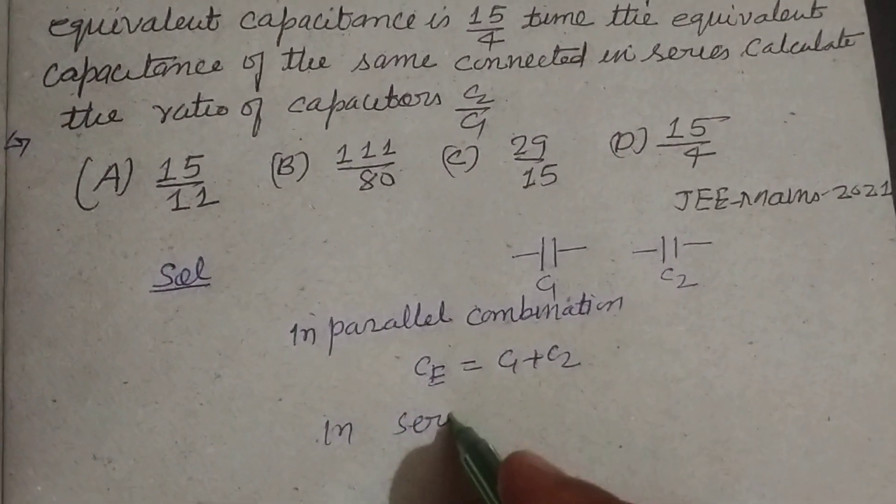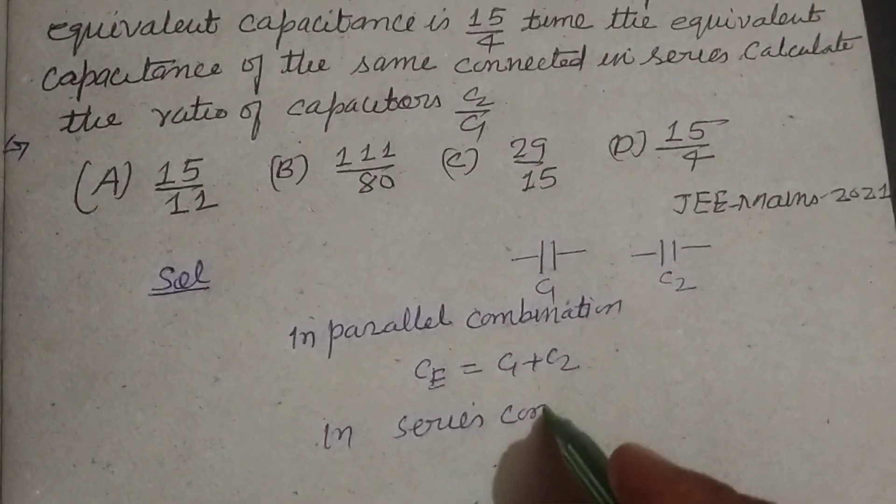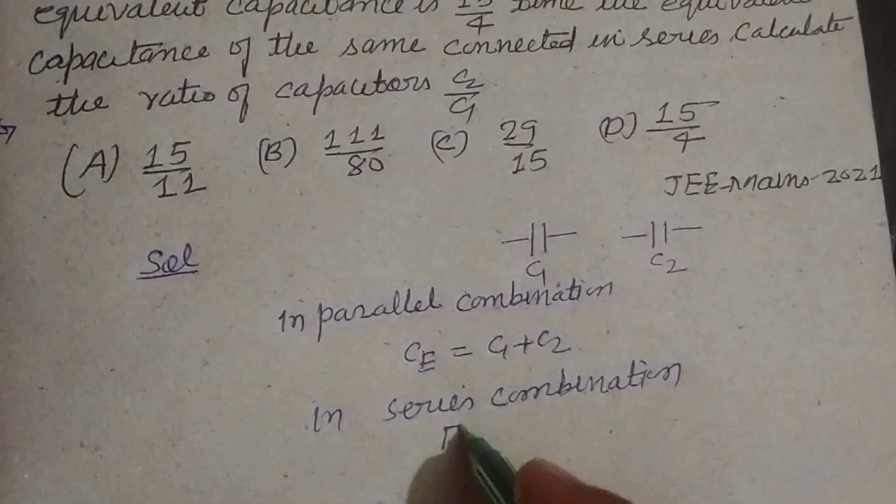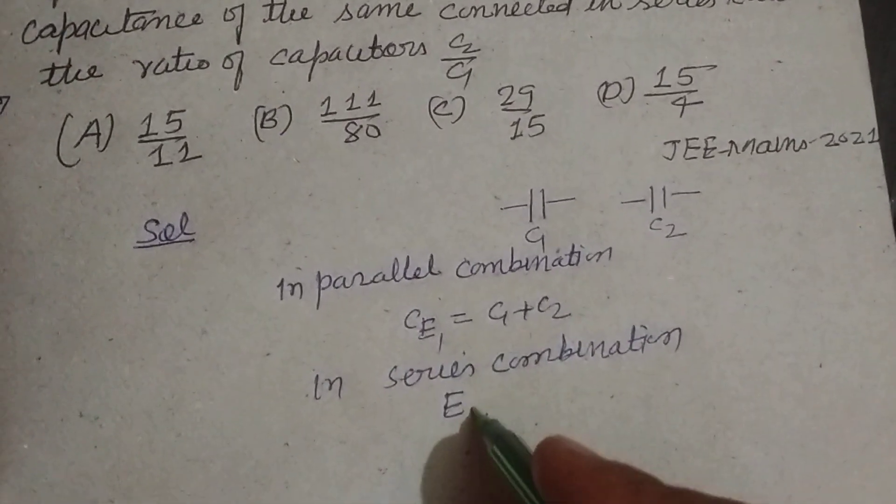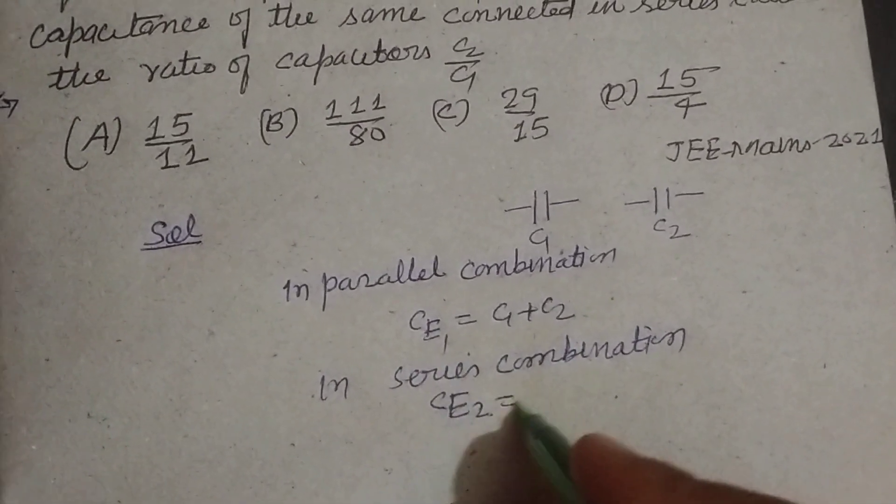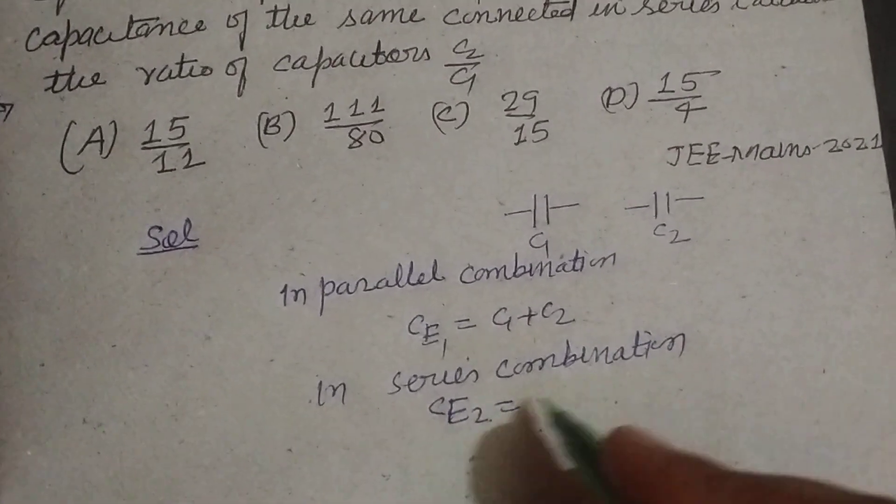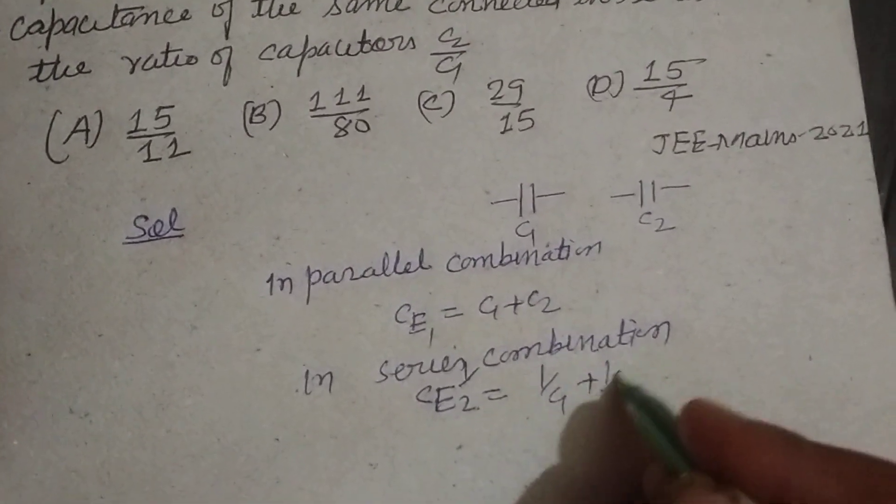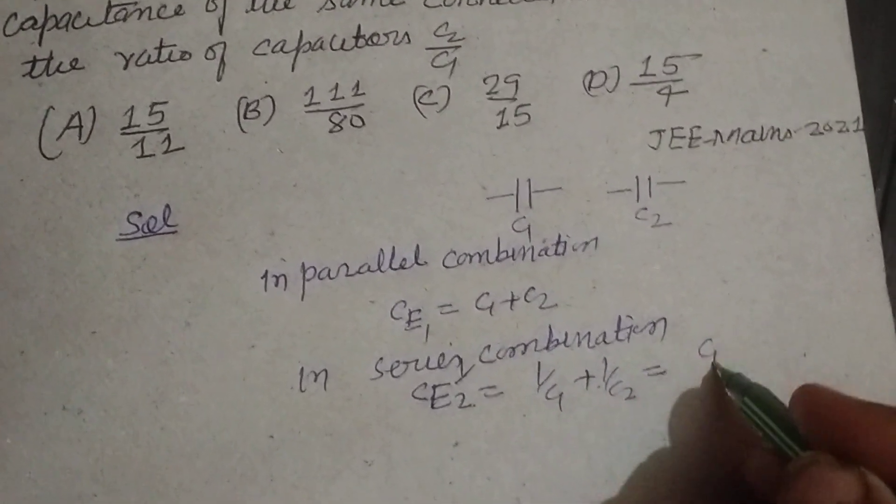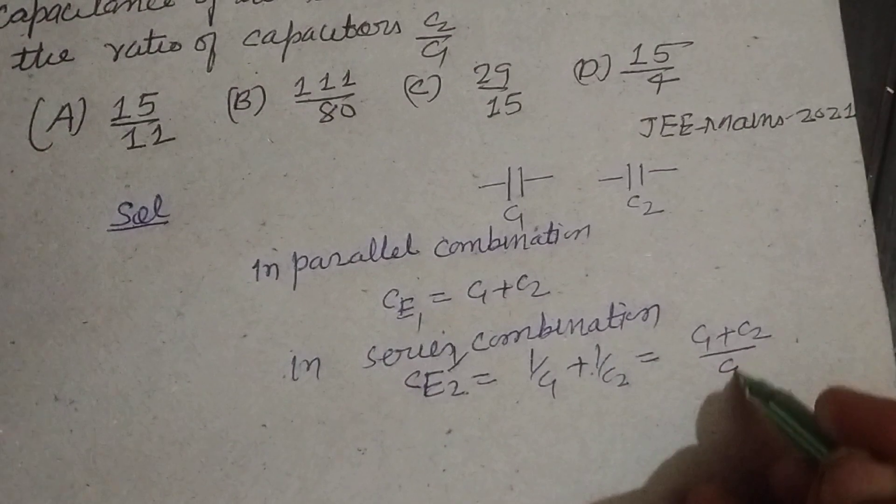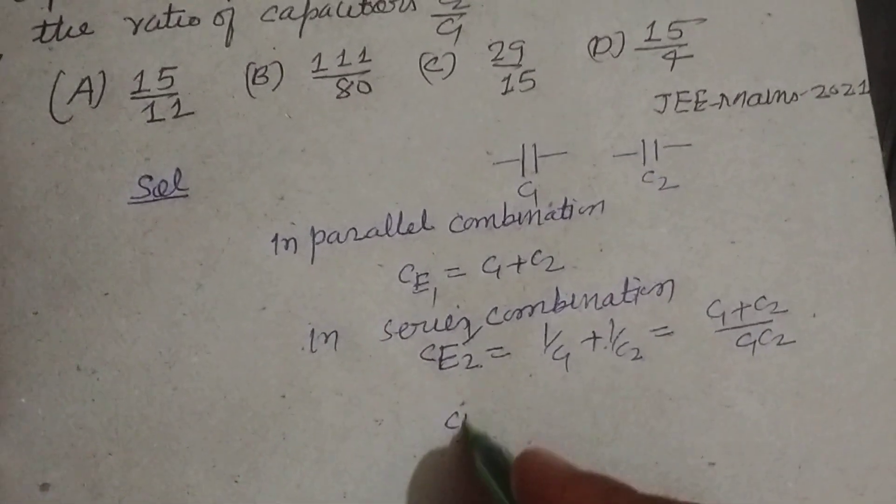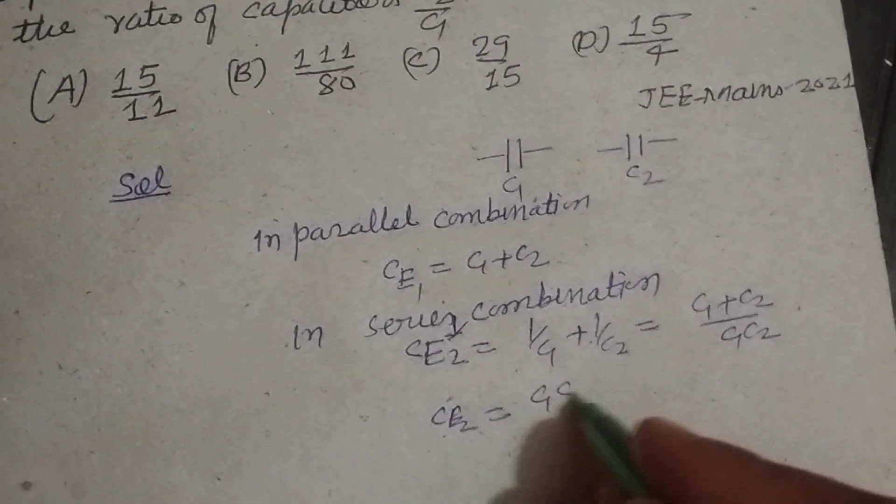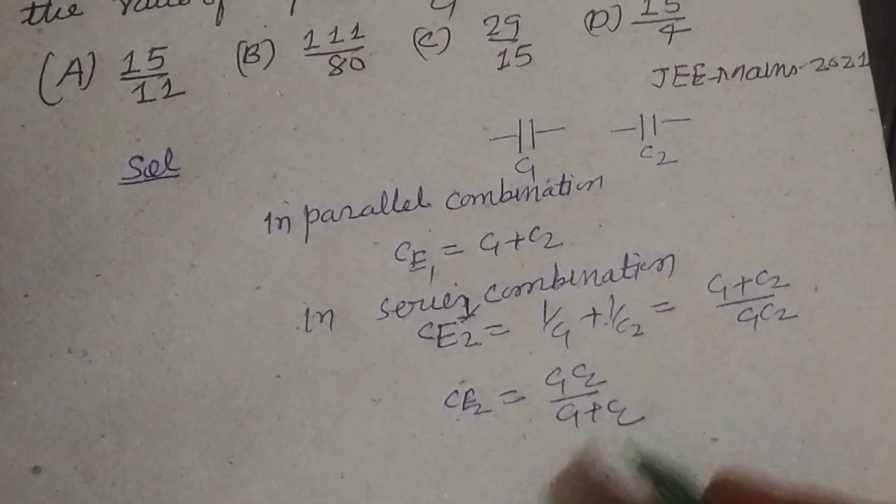In series combination, the equivalent, this is Ce1, this is Ce2, is 1 upon Ce2 equal to 1 upon C1 plus 1 upon C2. So this is C1 plus C2 over C1 C2. Therefore, Ce2 equal to C1 C2 over C1 plus C2.